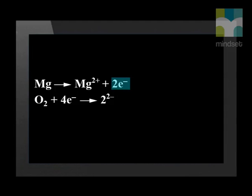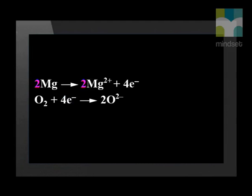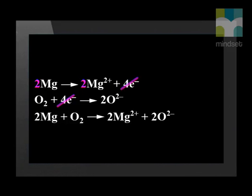We can now balance these two half reactions to form the overall net ionic reaction. Two electrons are given off and four are accepted, so we multiply the first half reaction by two so that it gives away four electrons. Now that equal numbers of electrons are given away and accepted, we cancel them and add the two half reactions to form the overall net ionic reaction.